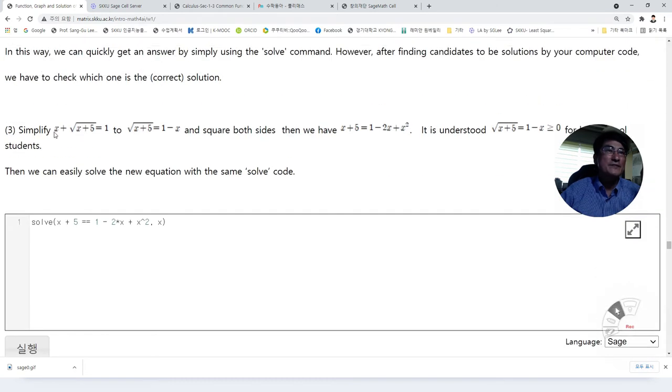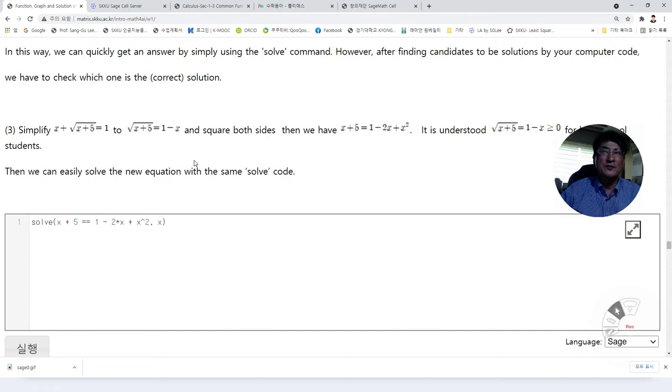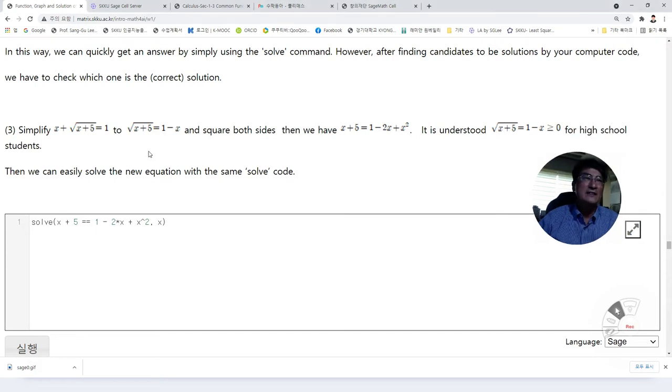For the next one, we can try to use the solve command simply, but it may not give us the solution that we like to have. In that case, we may just simplify this. Isolate square root on one side, move x to the right, then square this equation on both sides. Then we have x plus y equals one minus two x plus x squared. So solve this with the same command. Then we will have the answers.